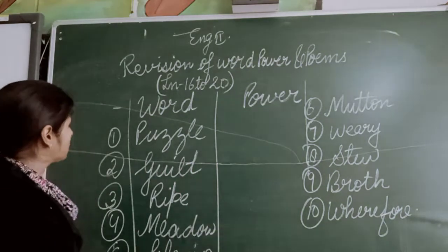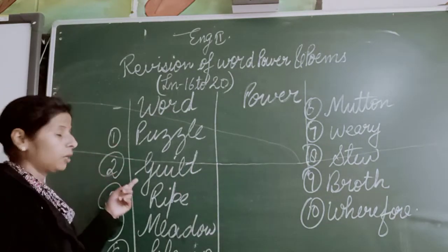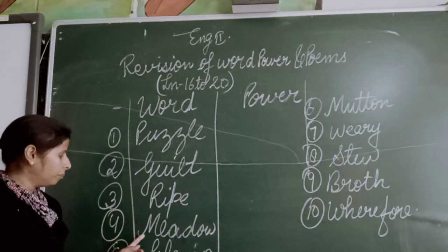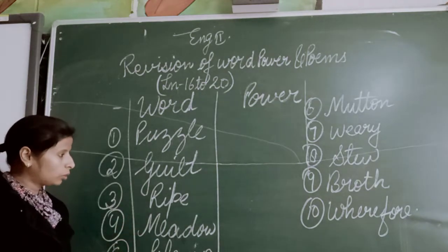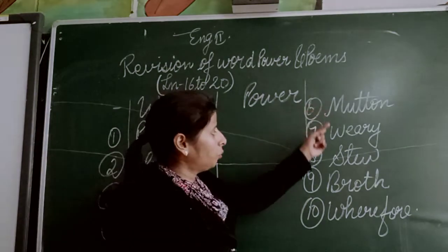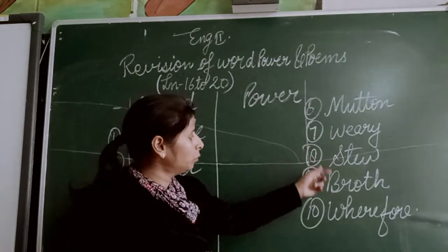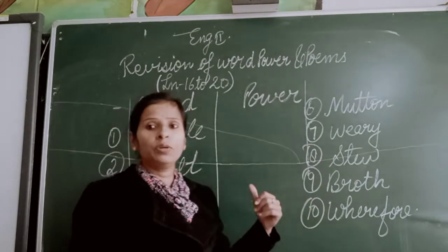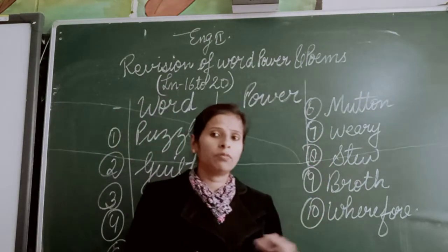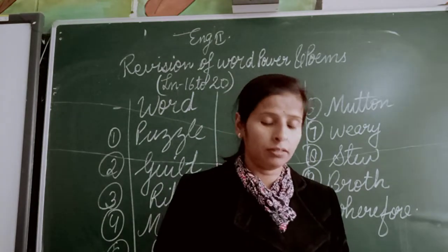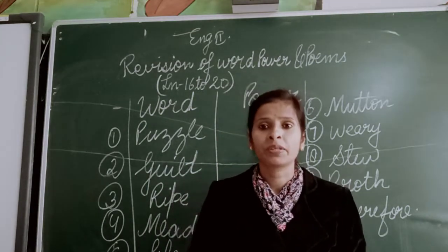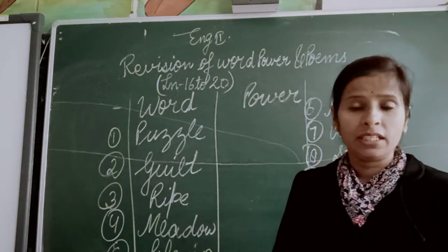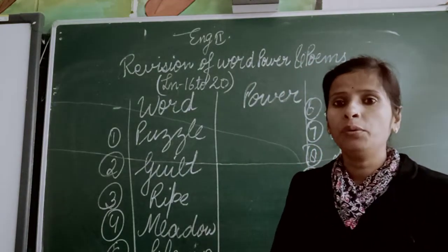So the ten word powers are: first — puzzle, second — guilt, third — widow, fourth — glowing, fifth — mutton, sixth — very, seventh — stew, eighth — brod, ninth — wherefore. First you will write all the word powers as you write in your school copy, and after that you have to write their meanings without looking.